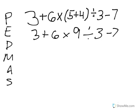So as I look at this, going from left to right, the first thing I see is that we're going to multiply. We're going to multiply 6 times 9, which gives us 54. So we rewrite the problem. 3 plus 54 divided by 3 minus 7.